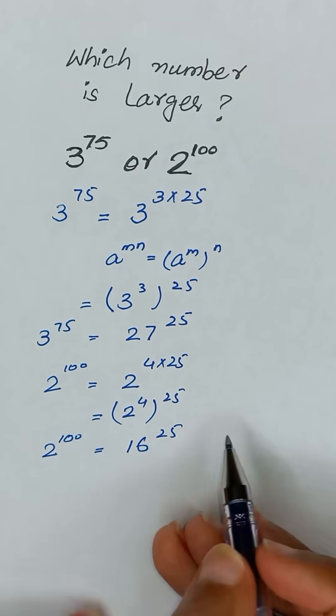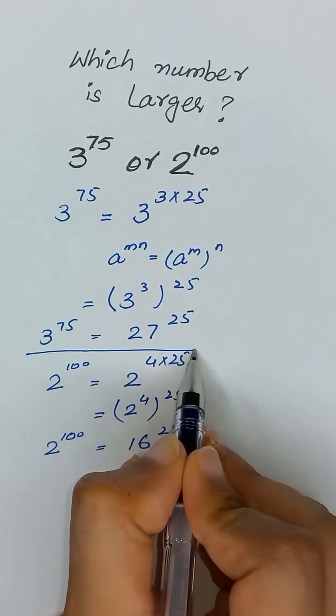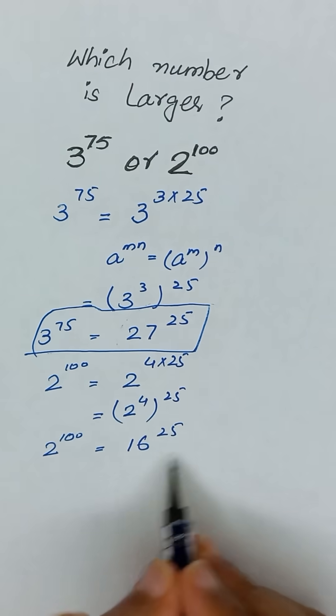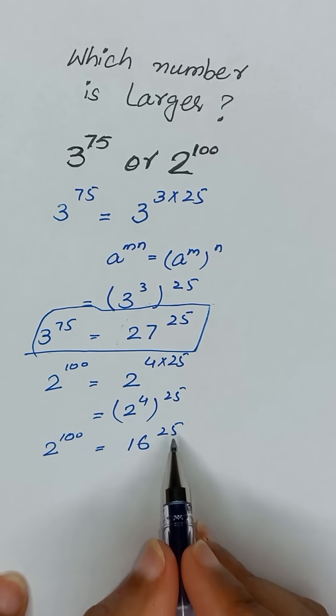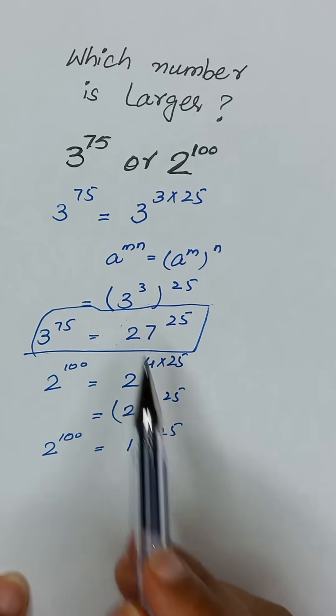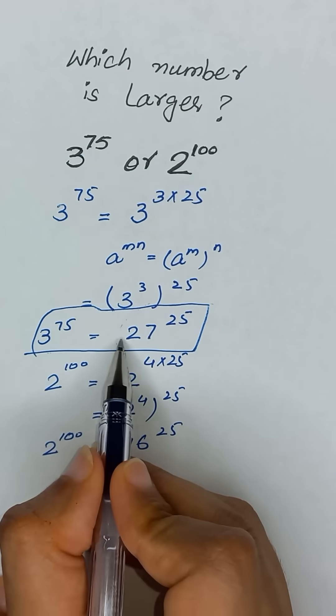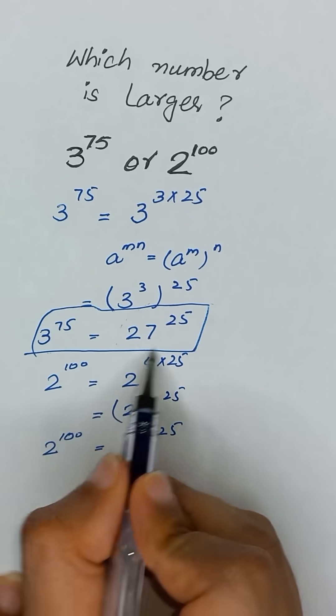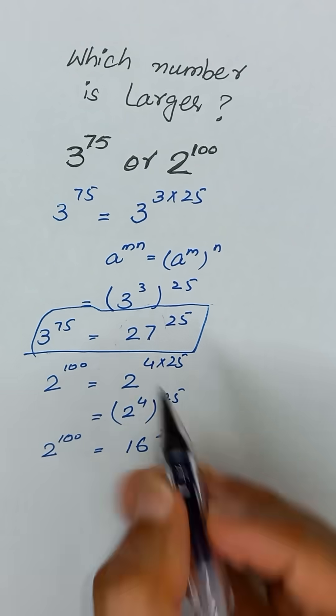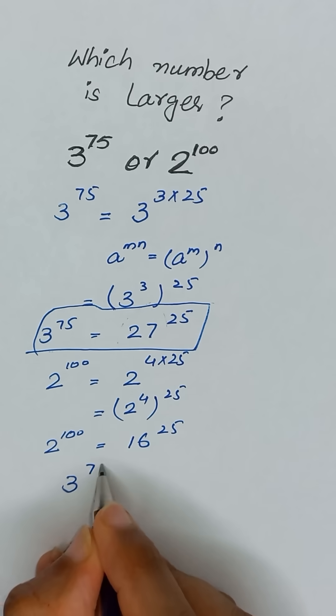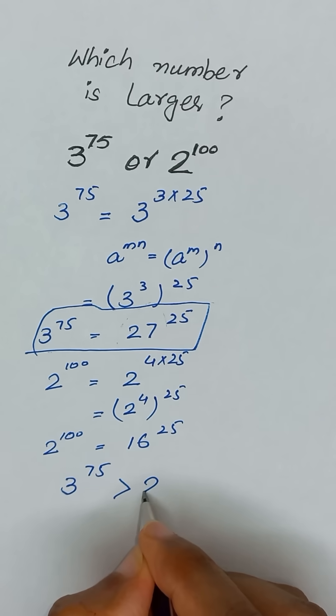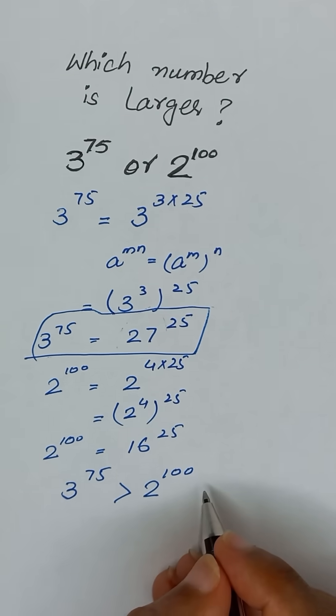Here we have 27 to the power 25 and here we have 16 to the power 25. Exponents are same, but bases are different. So the base of 3 to the power 75 is larger, it means 3 to the power 75 is greater than 2 to the power 100. Thanks for watching.